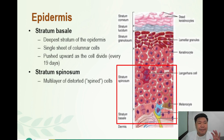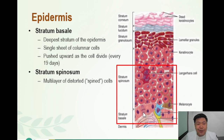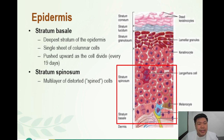Stratum basale is the deepest stratum of the epidermis — the bottom-most layer. It is a single sheet of columnar cells, as the mnemonic says: the base of the skin got a layer of columnar cells. You must remember that stratum basale is mitotically active — it is continuously dividing. Once cells are pushed upward, they continue to divide. According to some books, this division happens every 19 days.